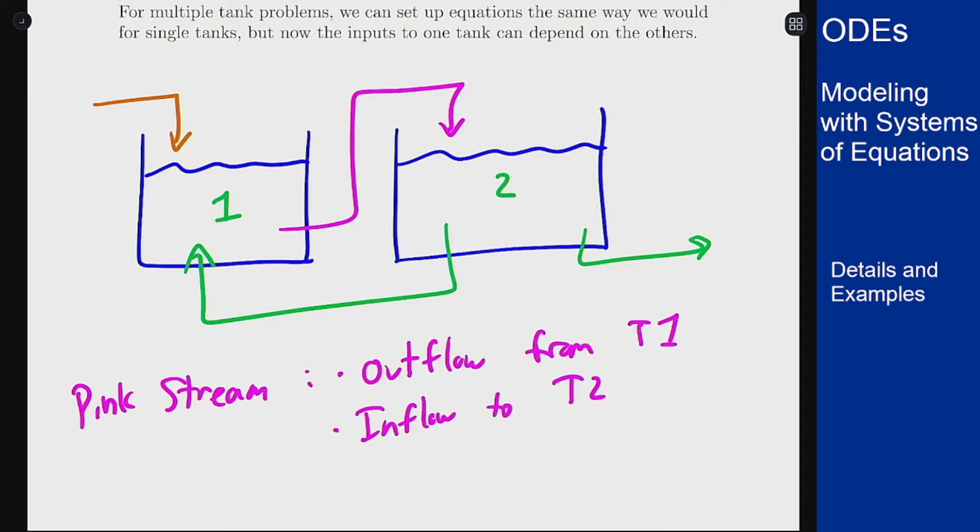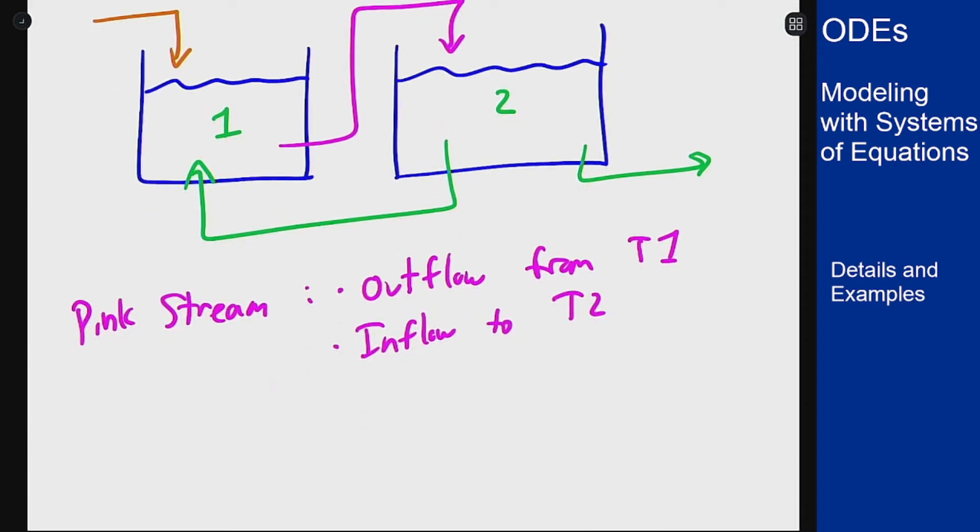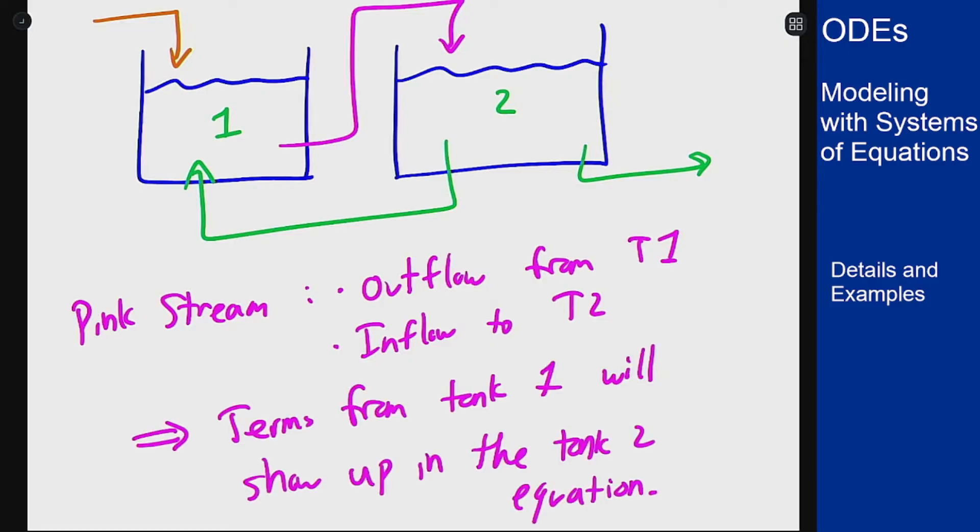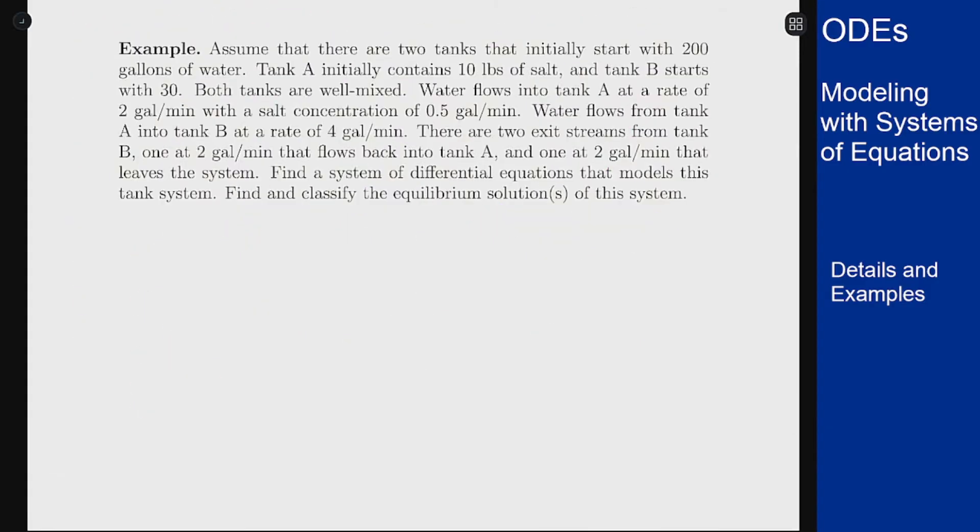Now the concentration in that stream or the amount of whatever you're measuring in that stream depends on the amount that's in tank one. This means I'm going to get a term from this stream involving the salt or whatever precipitate amount in tank one is going to show up in the tank two equation. And that gives rise to being a system that's going on here and not just a single equation because multiple things are changing and they're interacting as they go. So for an example of this, let's set up this problem here and then we will look for equilibrium solutions and see what we can classify about them.